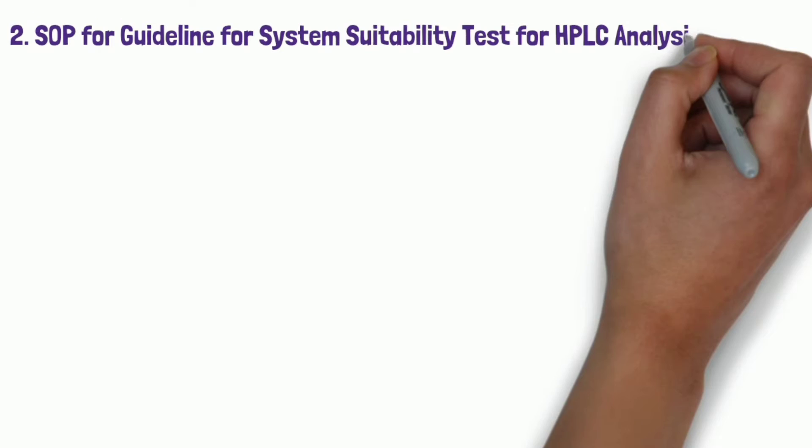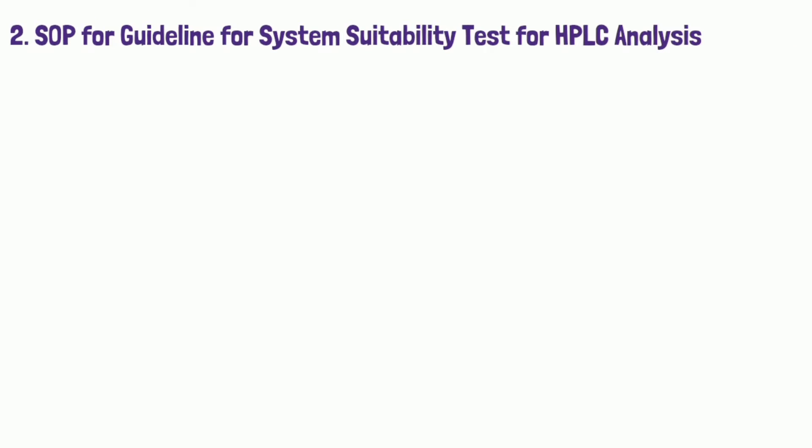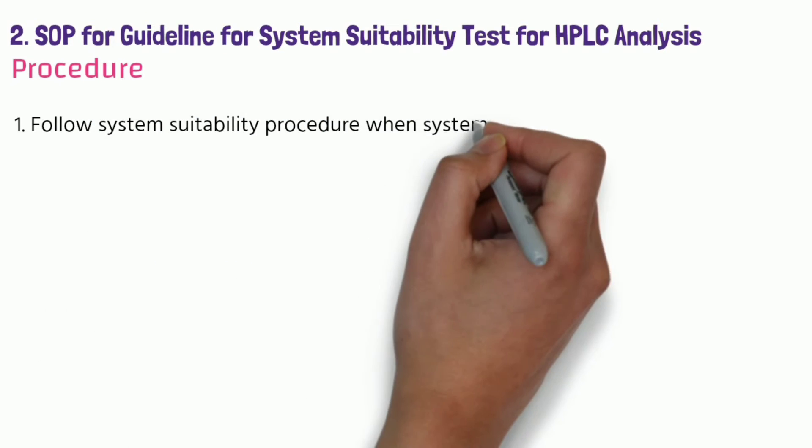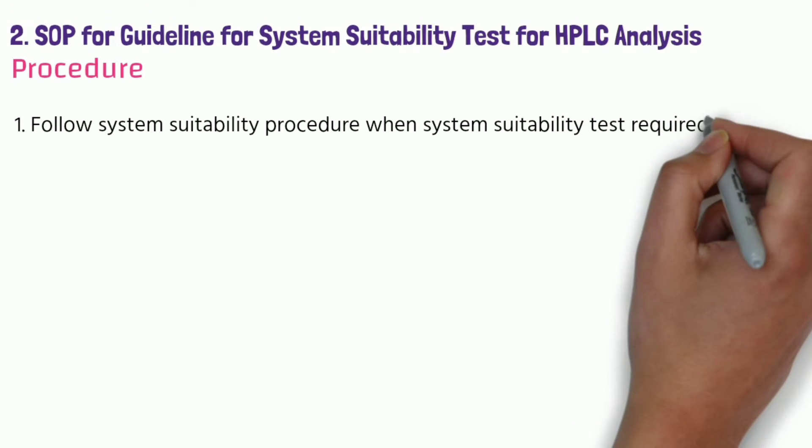In my previous lecture I have already covered two lectures regarding system suitability test because it is very important topic for chemical test. You have to watch those lectures also. Procedure for system suitability test SOP: Follow system suitability procedure when system suitability test required in HPLC analytical method.